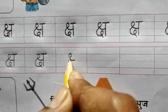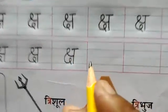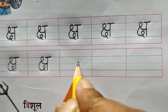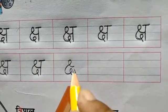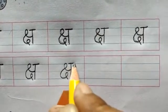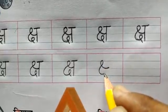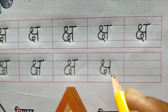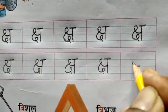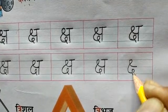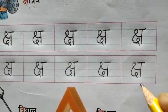First to third line तक standing line और उपर छोटी सी sleeping line। ऐसा करके उपर गोल करके नीचे गोल करना है और उसे थोड़ा ऐसे लंबा खीचना है। First to third line तक standing line, उपर छोटी सी sleeping line। ऐसा करके उपर की तरफ गोल करना है, नीचे लिया के नीचे की तरफ ऐसे गोल करना है, first to third line तक standing line, उपर छोटी सी sleeping line।